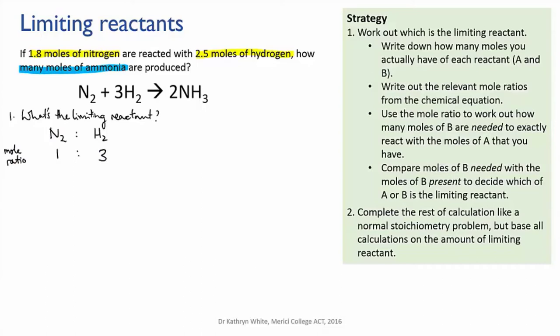Now, we choose one of the reactants, and we write the number of moles that we actually have underneath the mole ratio. It doesn't matter which one we choose. Because it's a ratio, we can use it in either direction. So let's take nitrogen for this example. We have 1.8 moles of nitrogen. Now, the mole ratio is 1 to 3. So to find the amount of hydrogen that would be needed to react exactly with 1.8 moles of nitrogen, we just multiply that by 3. And that gives us 5.4 moles of hydrogen.